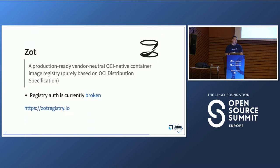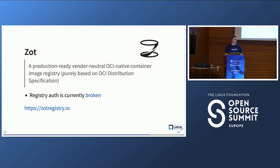The other option in the CNCF landscape is Zot — a project Cisco developed initially and donated to the CNCF. Both distribution and Zot are CNCF sandbox projects. The problem with Zot is that the registry auth spec is kind of broken at the moment — I do have a fix and PR and we're in communication with the Zot maintainers. But Zot is much smaller, much more lightweight, and is basically a pure OCI distribution implementation without CDN and other extras.